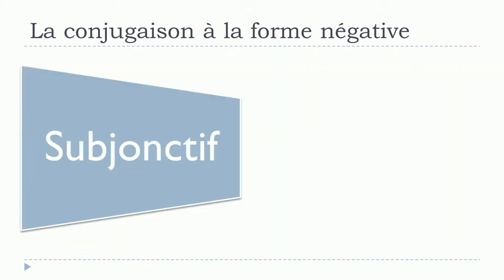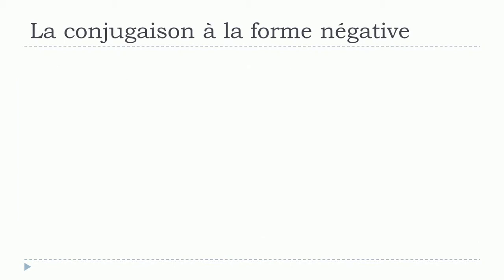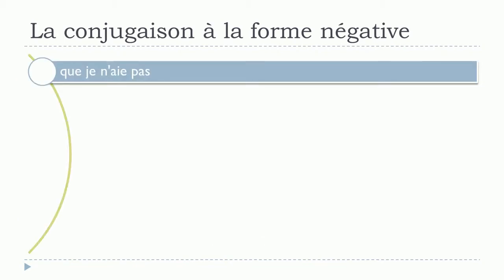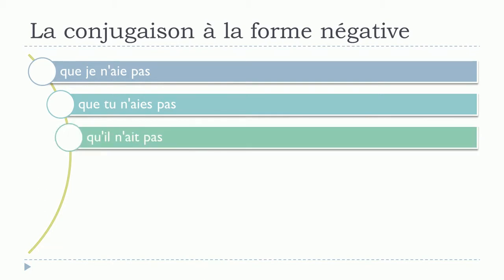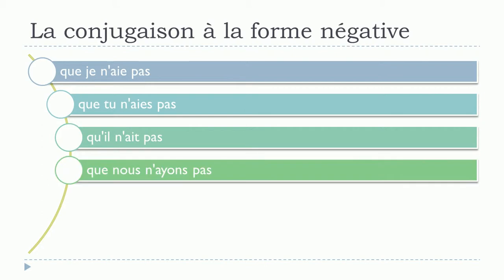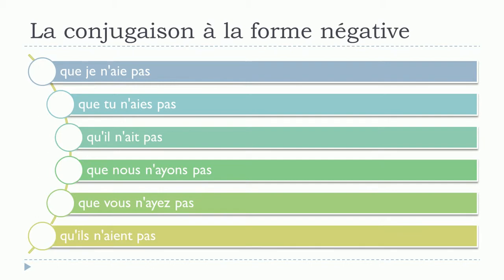And then subjonctif présent. Que je n'aie pas. Que tu n'aies pas. Qu'il n'ait pas. Que nous n'ayons pas. Que vous n'ayez pas. Qu'ils n'aient pas.